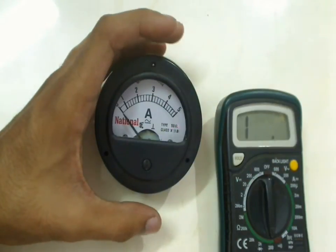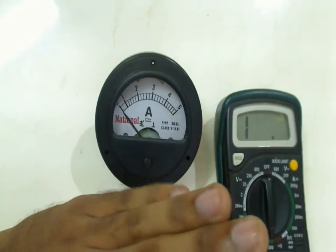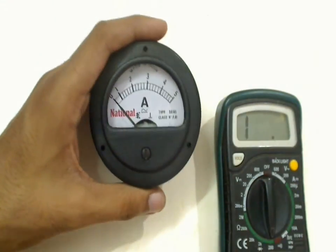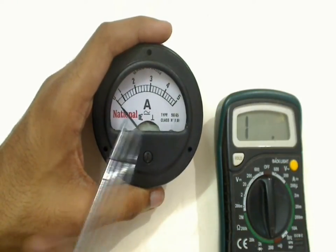But usually these meters are not as accurate as these digital multimeters. So usually people these days prefer these digital multimeters over these ammeters. But in olden days we only had these ammeters to use and even the voltmeters were given in this analog mode.